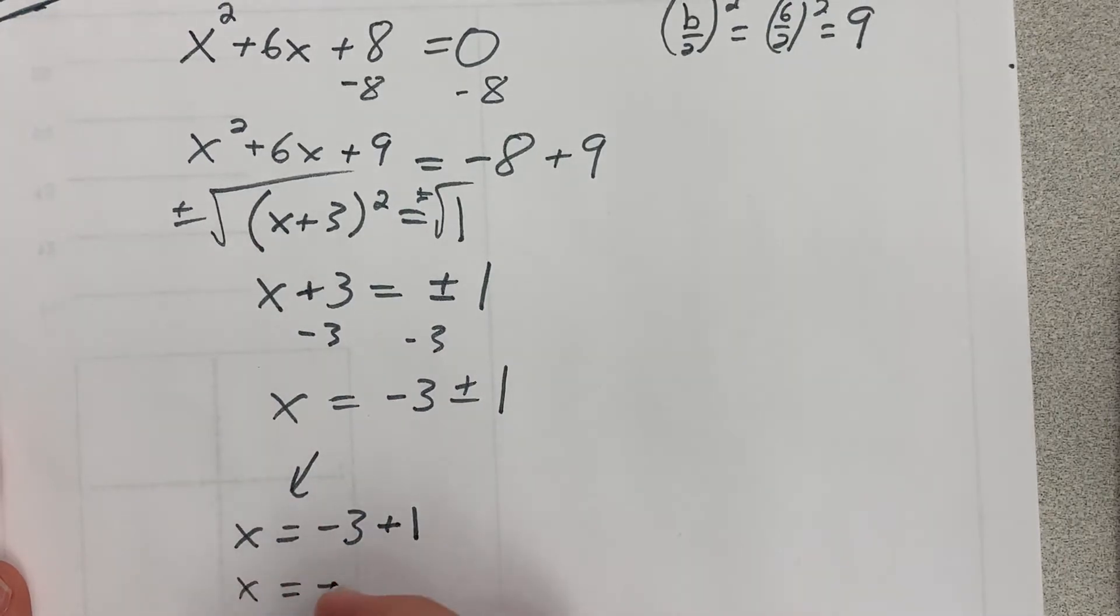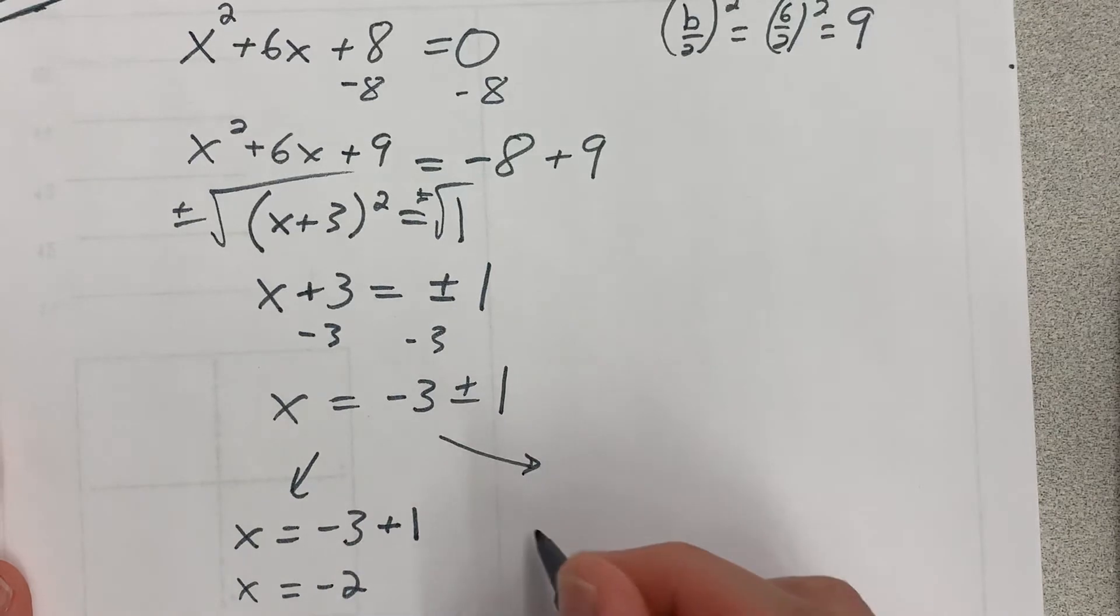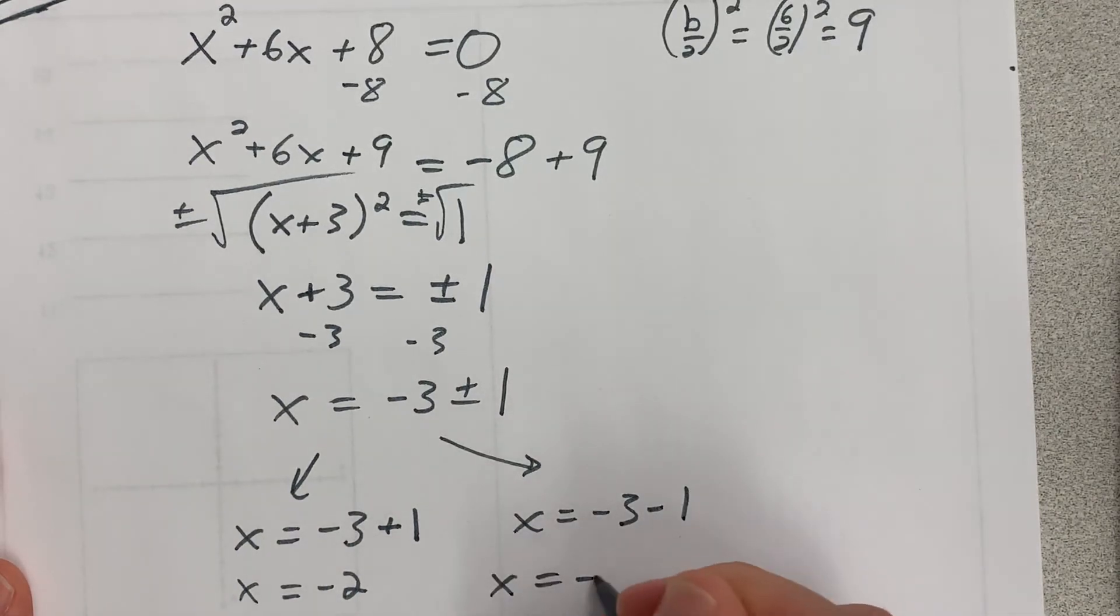And the two solutions are either x equals negative 3 plus 1, which would be x equals negative 2. Or x equals negative 3 minus 1, which would be x equals negative 4.